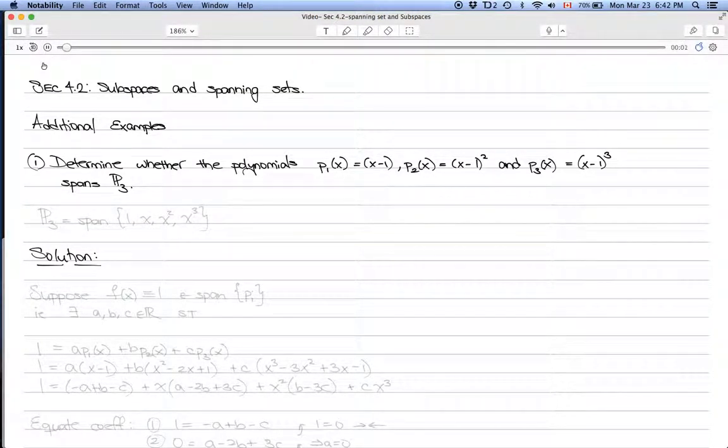I want to take a look at some examples of subspaces and spanning sets. The first example is written below. Determine whether the polynomials p1(x) = x - 1, p2(x) = (x - 1)², and p3(x) = (x - 1)³ span P3.